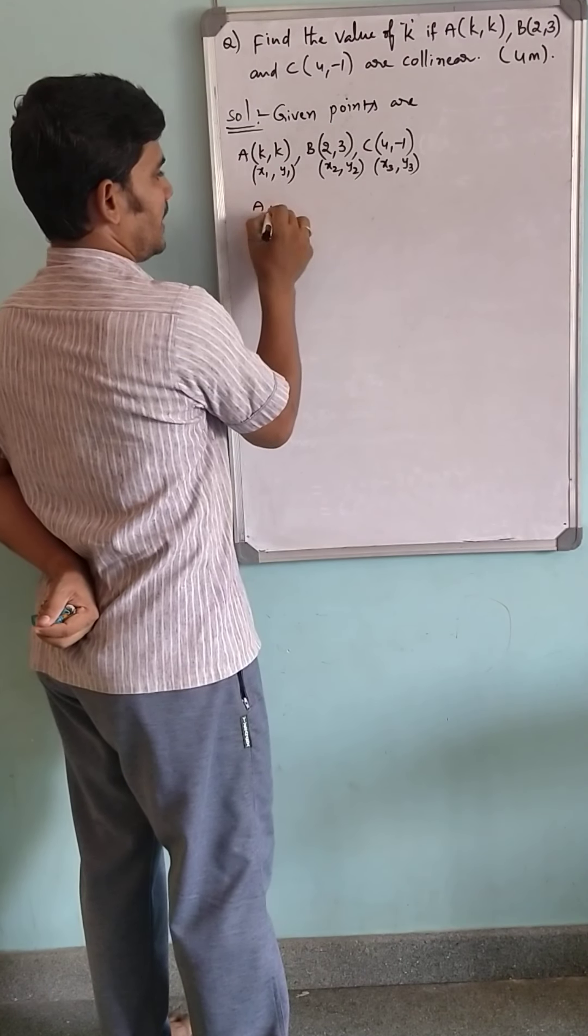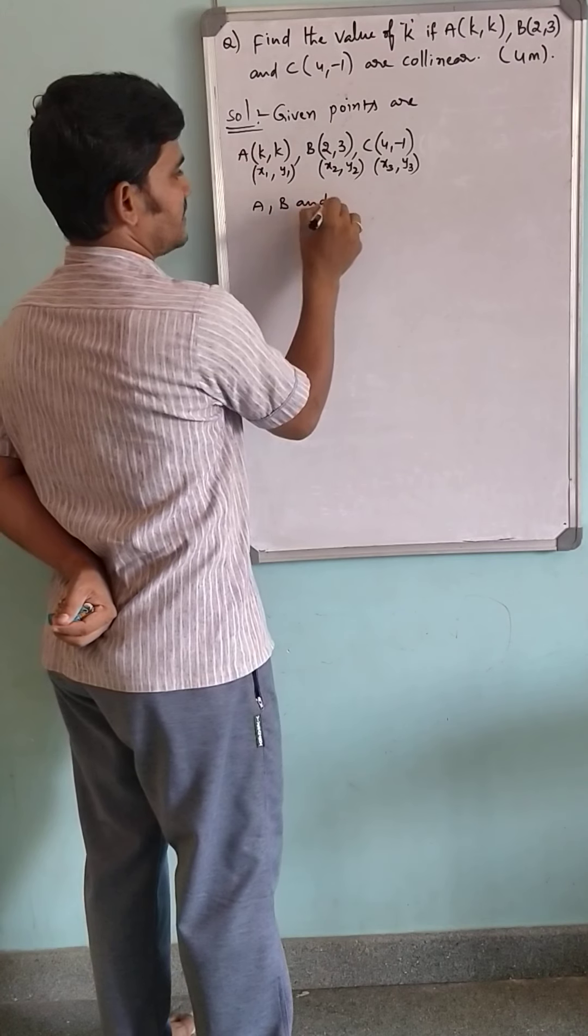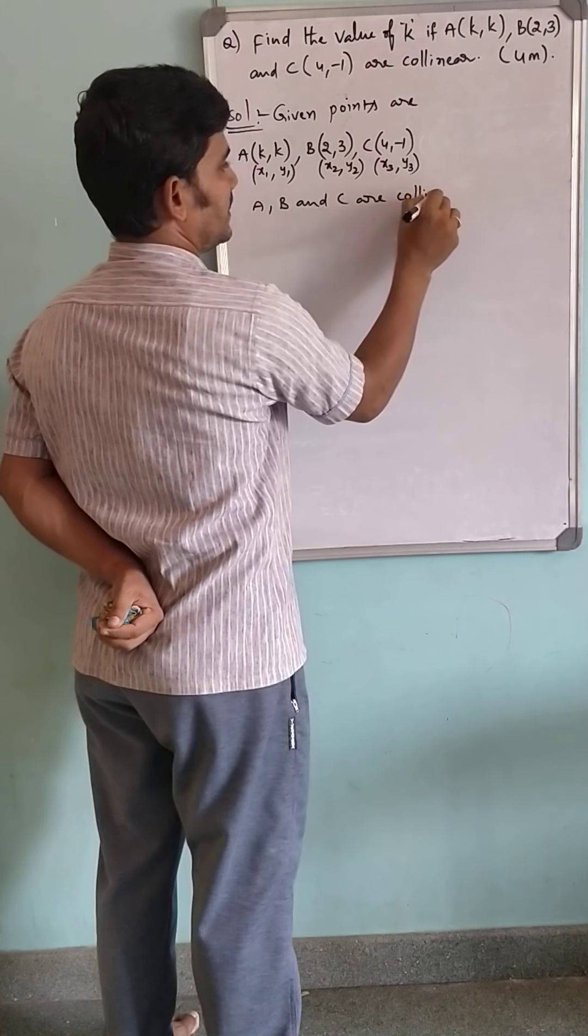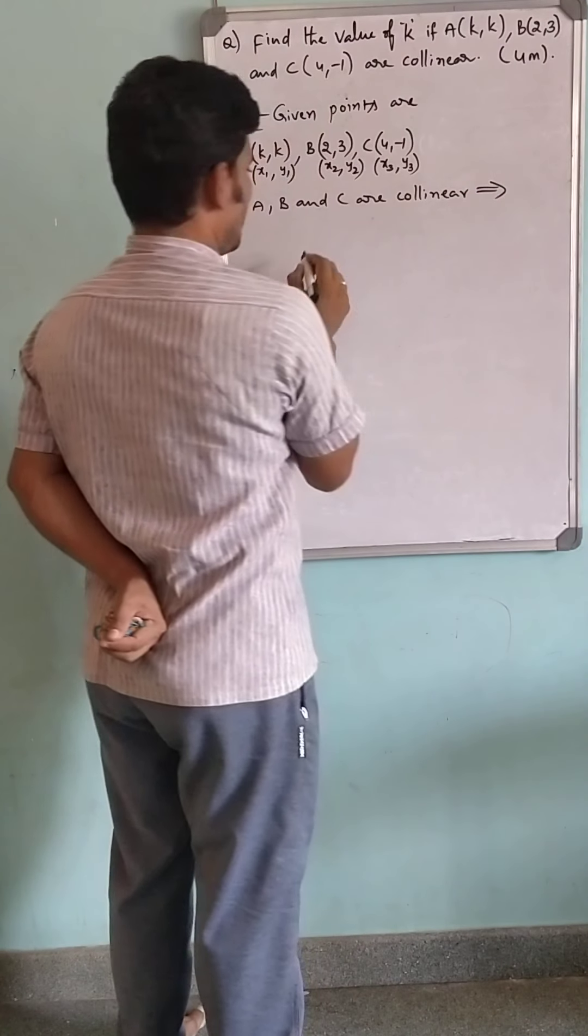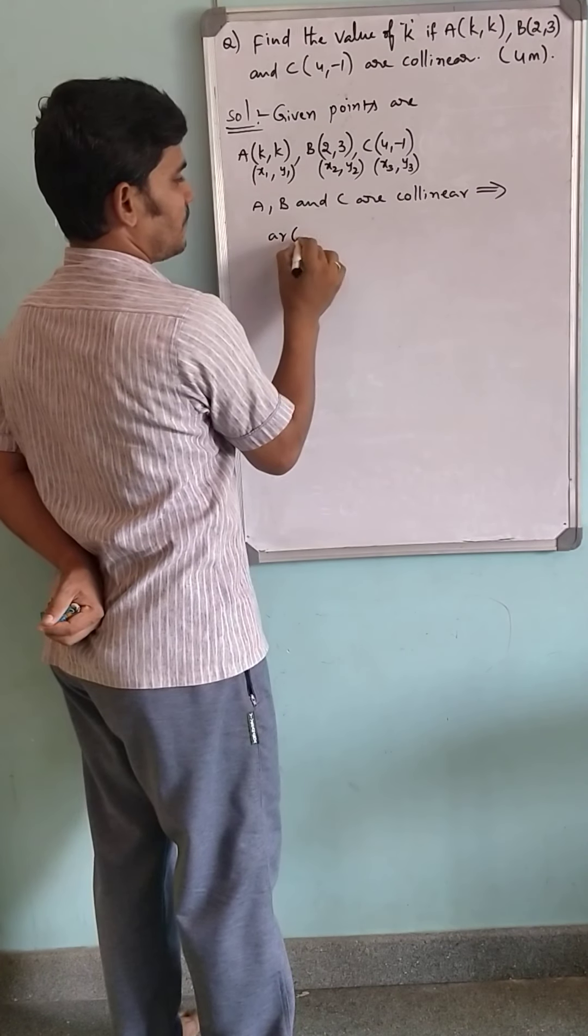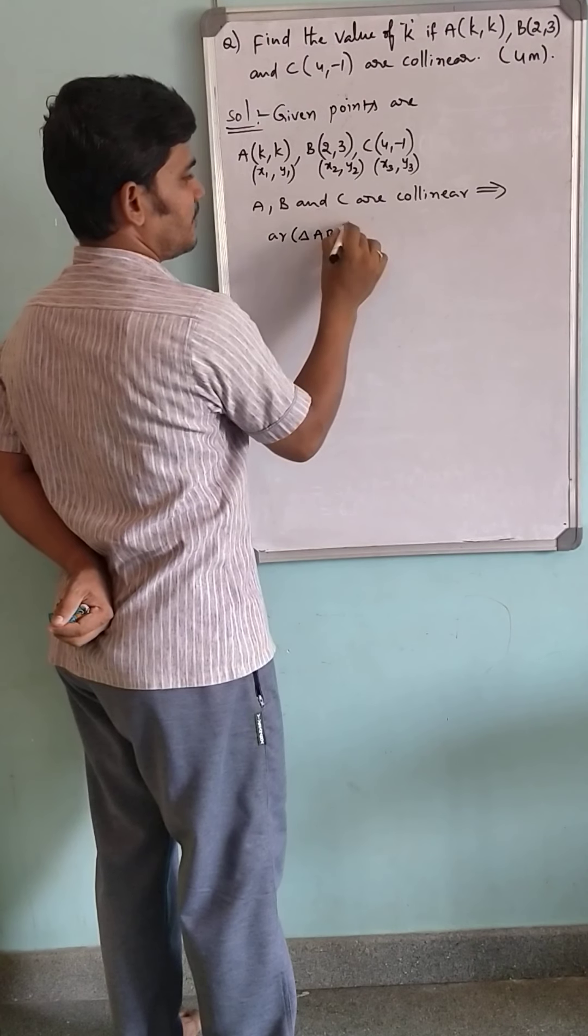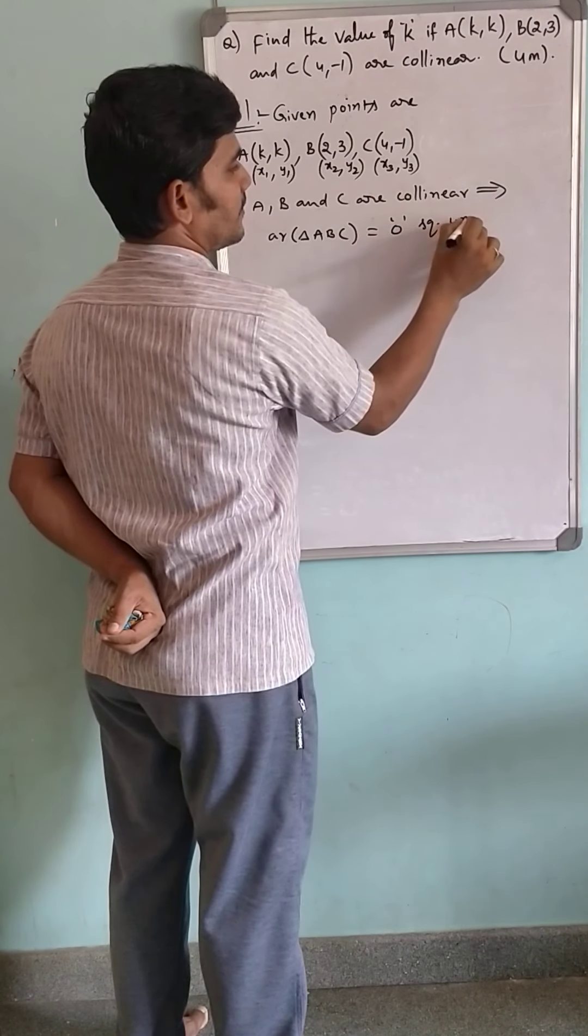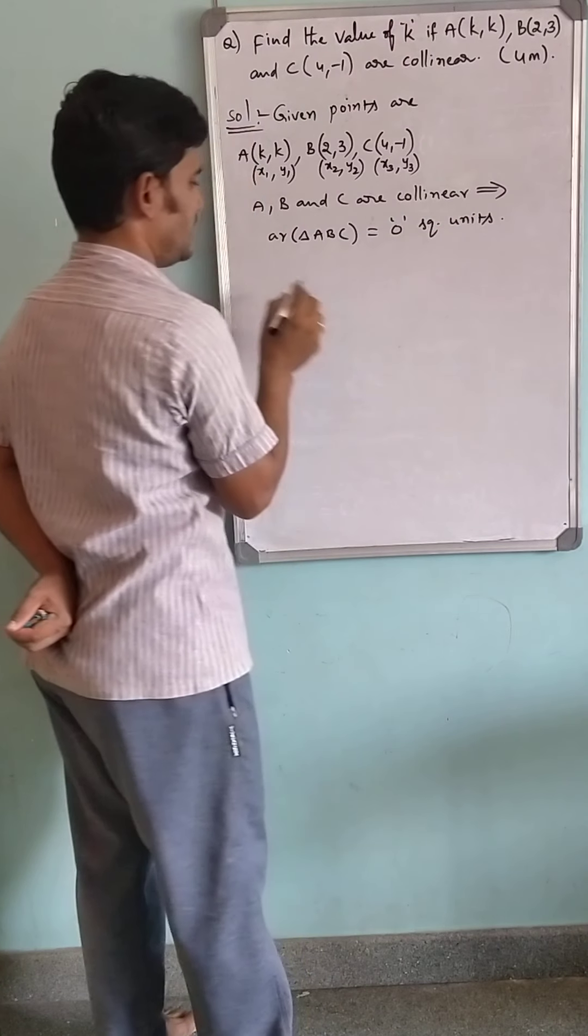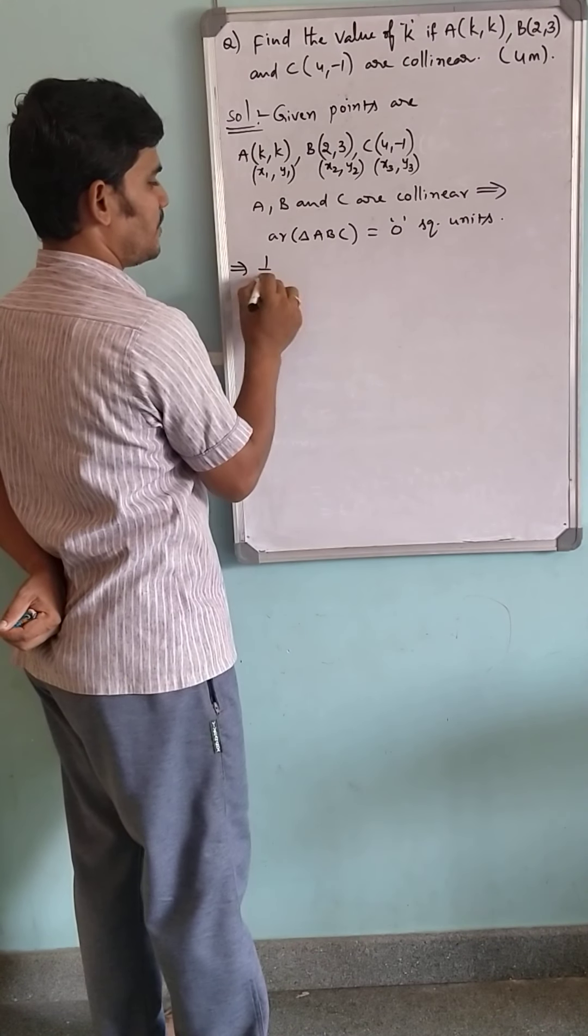A, B, and C are collinear, which means that the area of triangle ABC becomes 0 square units. That is half times modulus.